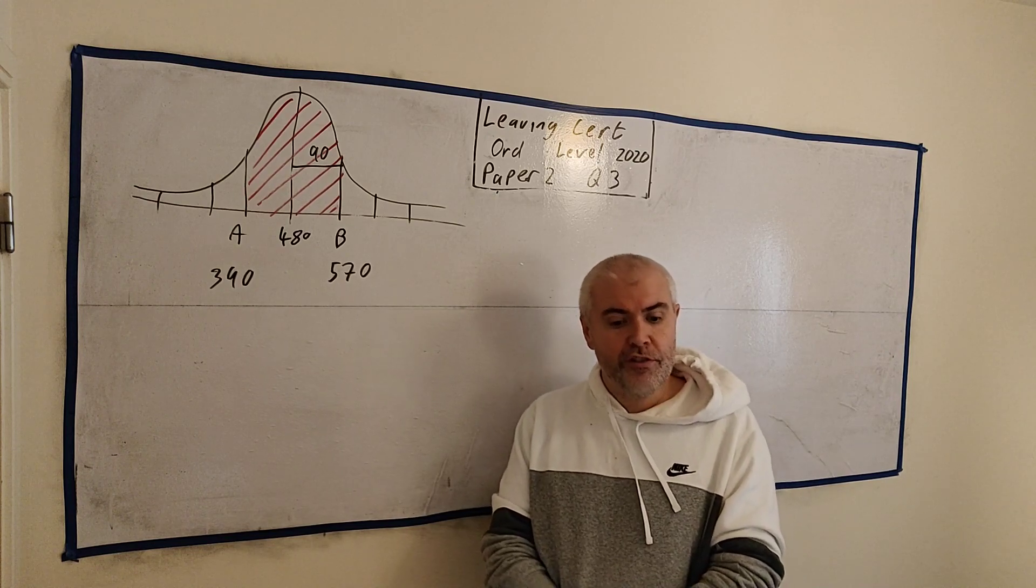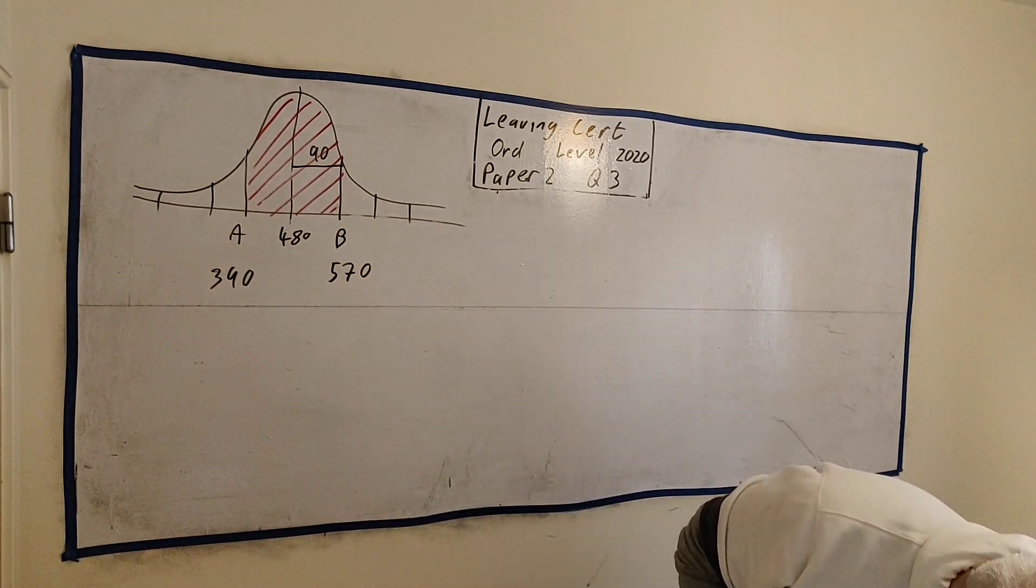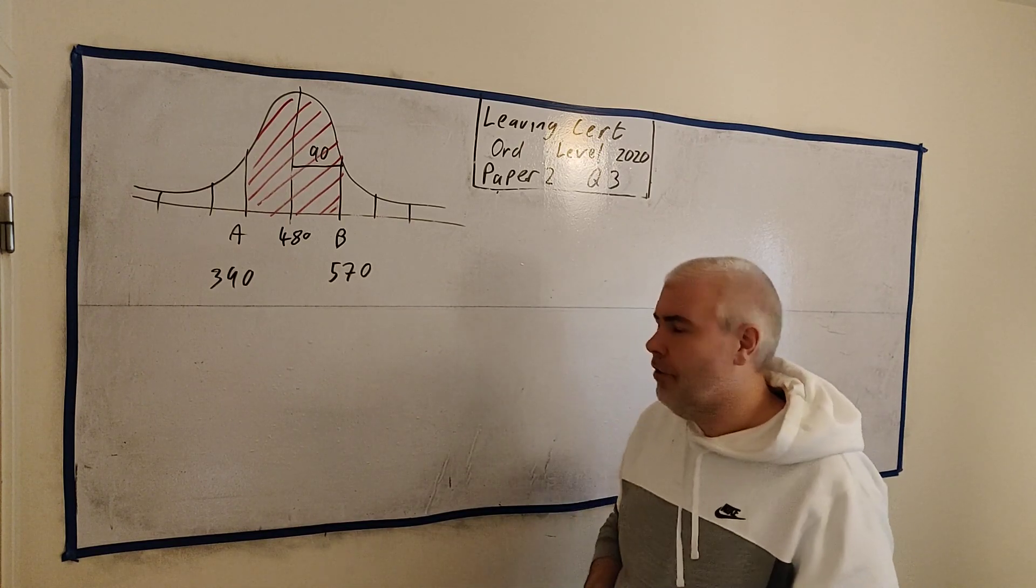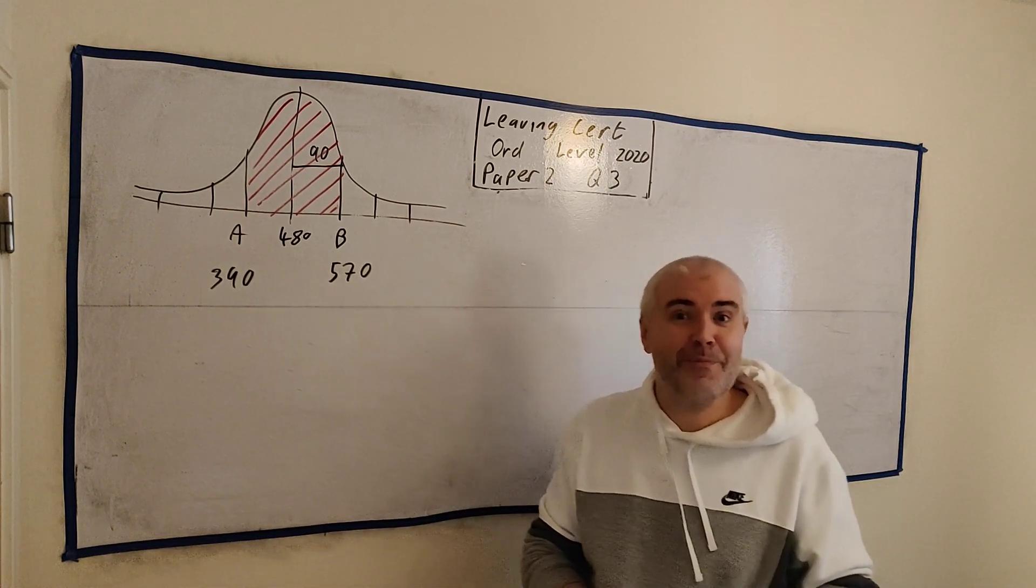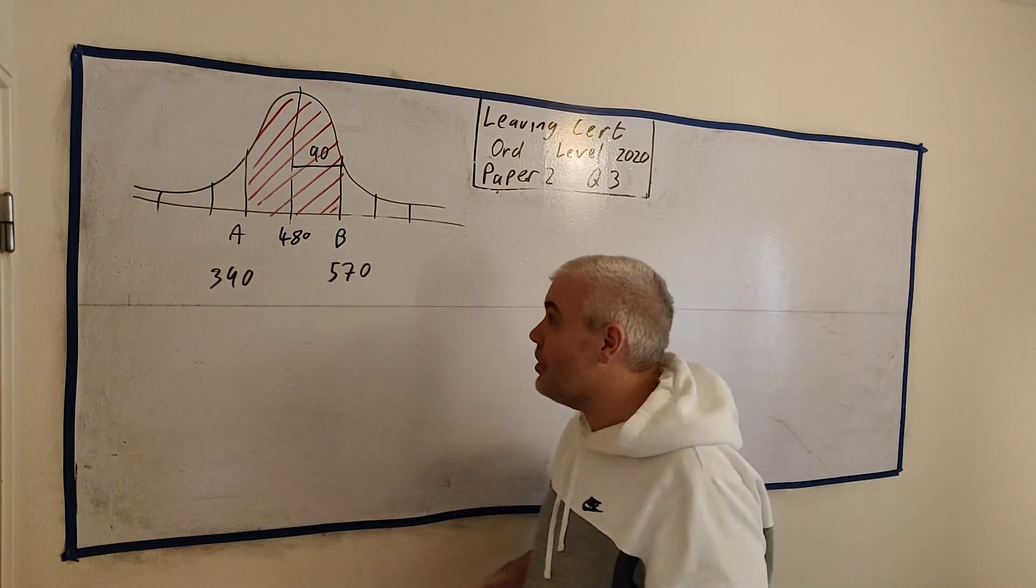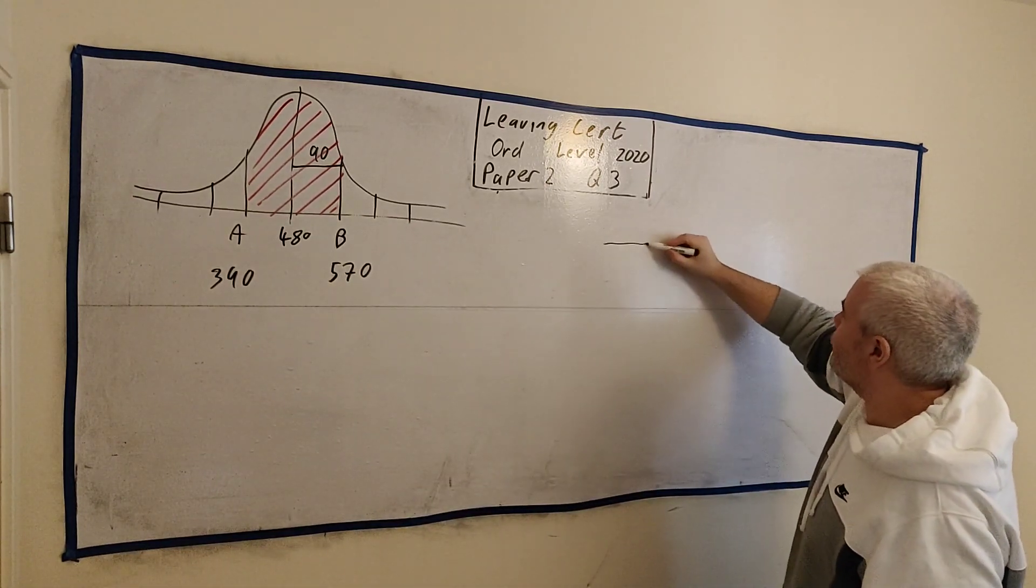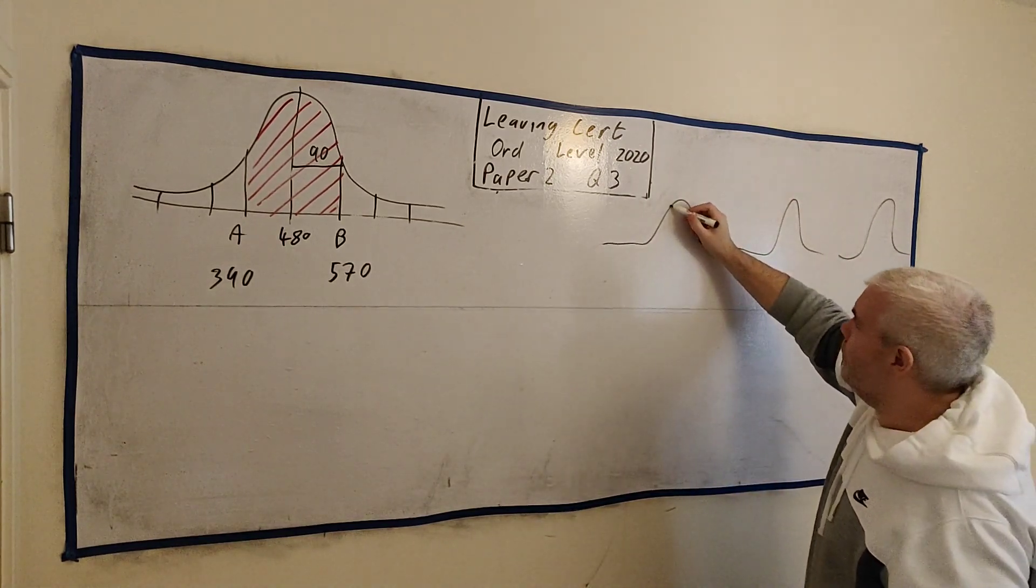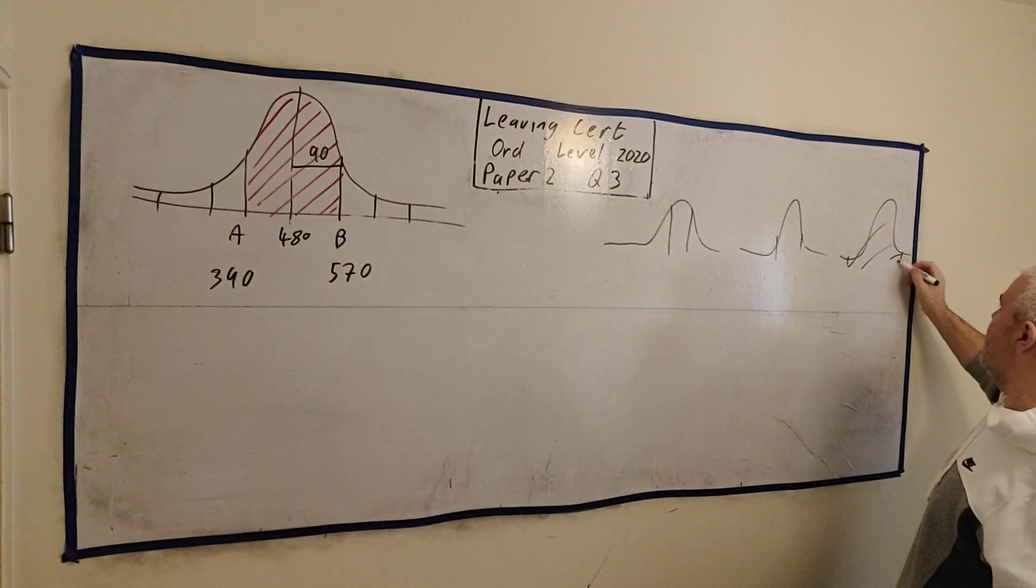Part two says use the empirical rule to estimate the number of candidates within this region. I don't like this part because you have to memorize three numbers. In the ordinary level, we make you memorize three numbers. Anything between one standard deviation. I'll draw out three pictures here. That's one standard deviation. That's two. And that's three. Let me shade in these regions. The red one is this first one. Between these next two would be the next one.